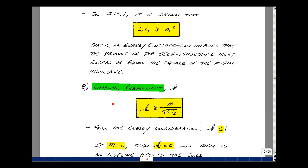Let's next define what's called the coupling coefficient. Let's set it equal to m divided by the square root of L1 and L2. Now, based upon our conservation of energy argument that yielded this equation on top here, that implies that k is less than or equal to 1. In other words, taking this equation here and dividing through by L1 L2, and then taking the square root.